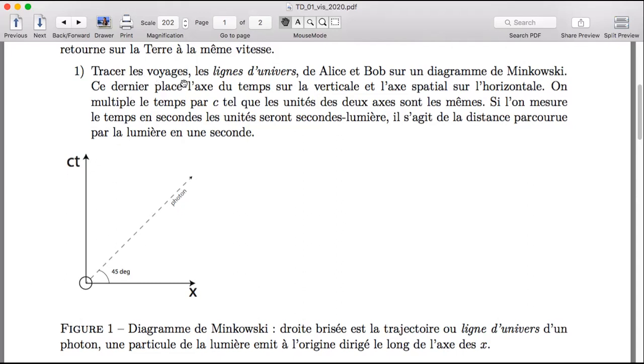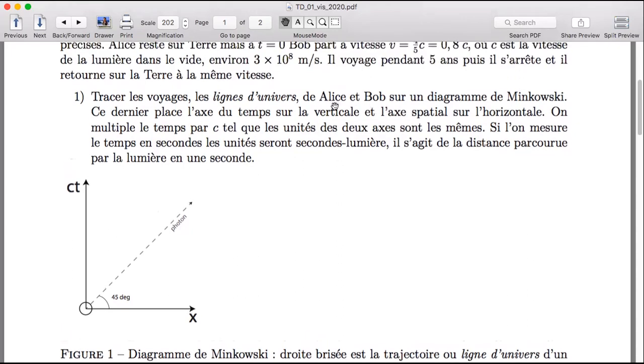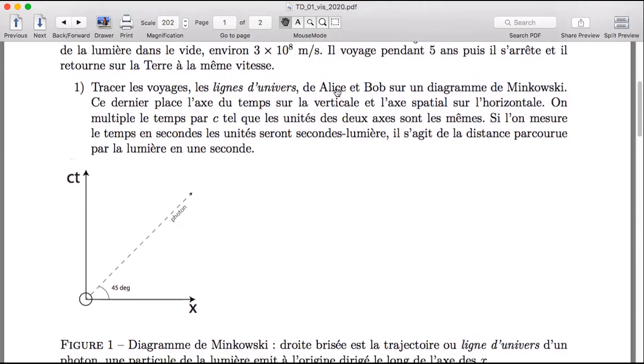Yeah, so this is our Minkowski diagram. And then I ask in this problem to use these axes and then let's do the same thing, trace the trajectories, but now for Alice and Bob. We can start with Alice if you like. So this little circle here, I guess it's an O for origin, but it's also supposed to be the earth, but I didn't know how to make it look like the earth. So other than make it round. So this is the earth.